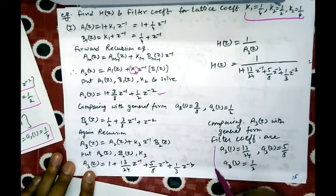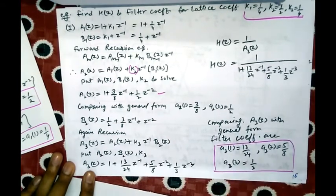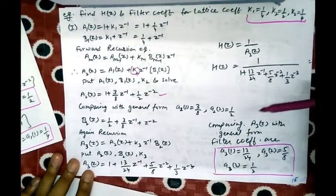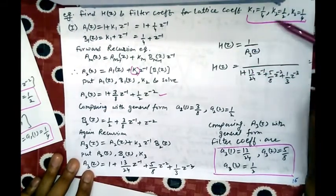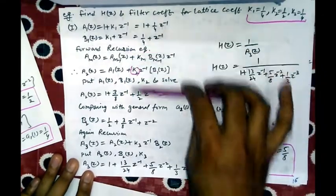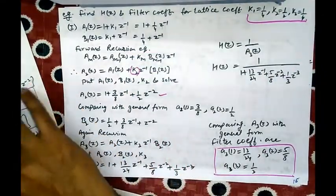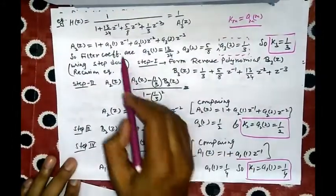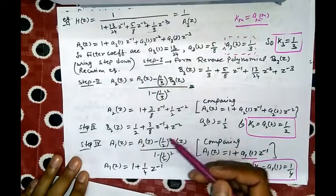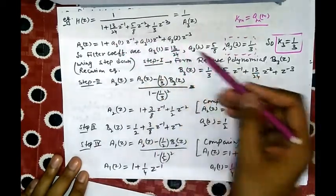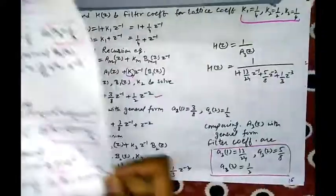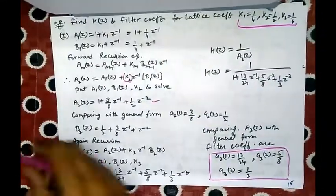So there are two types of problems for lattice structures. First, given lattice coefficients, find filter coefficients using forward recursion. Second, given a system transfer function with filter coefficients, find lattice coefficients using step-down recursion and draw the lattice structure.